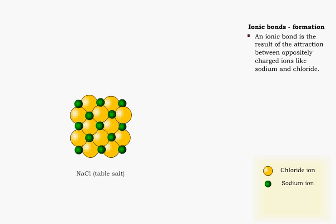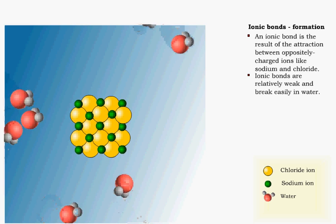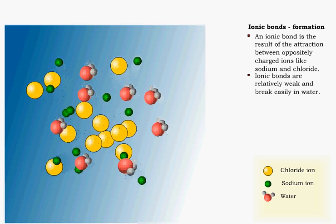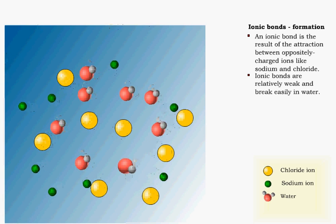Table salt, sodium chloride, is an example of an ionic compound formed by the attraction between sodium and chloride ions. Ionic bonds are weak and will break easily in water. This is why salts dissolve in water.